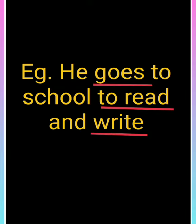A quick sentence example: 'He goes to school to read and write.' In this particular case, we will see that there is one subject and one finite verb. If there is one subject and one finite verb, then it is a simple sentence. The subject here is 'he' — so one subject is identified.